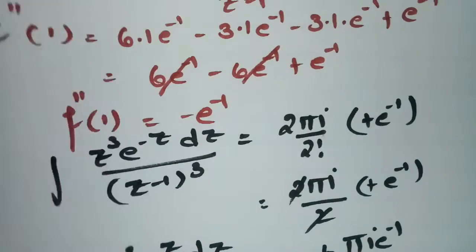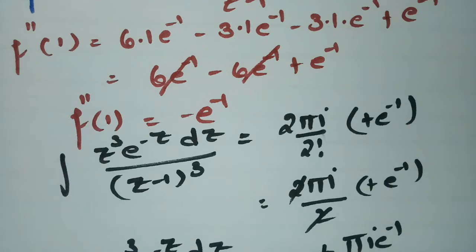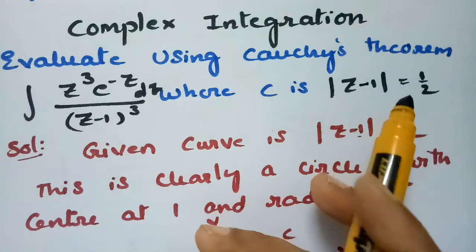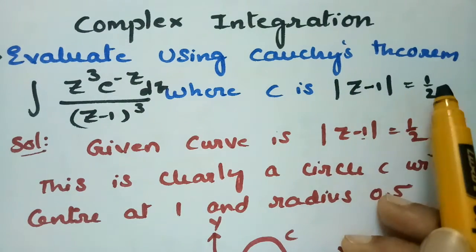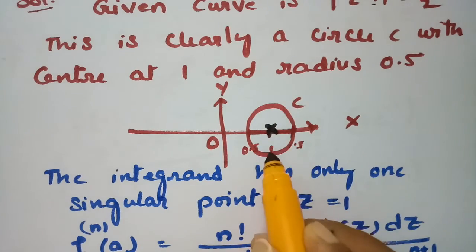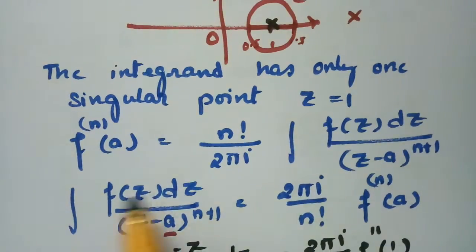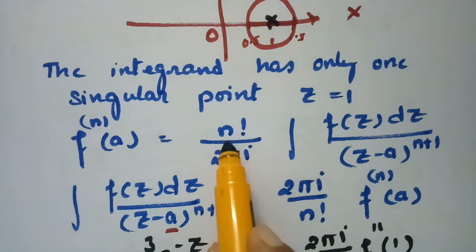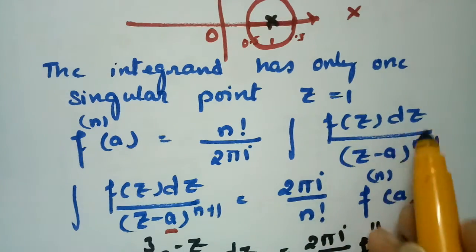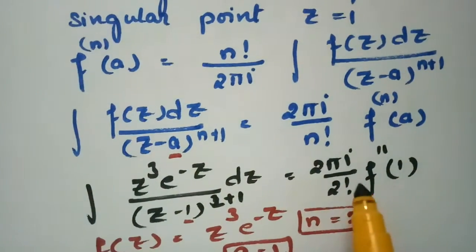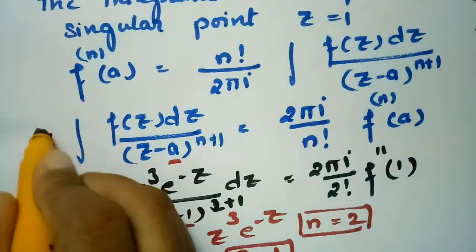To summarize how to solve this: we evaluate the integral using Cauchy's theorem. The circle is defined with center 1 and radius one half, so 1 is clearly inside the circle c. Therefore we can apply Cauchy's integral theorem, which states f nth derivative of a equals n factorial divided by 2πi times the contour integral.